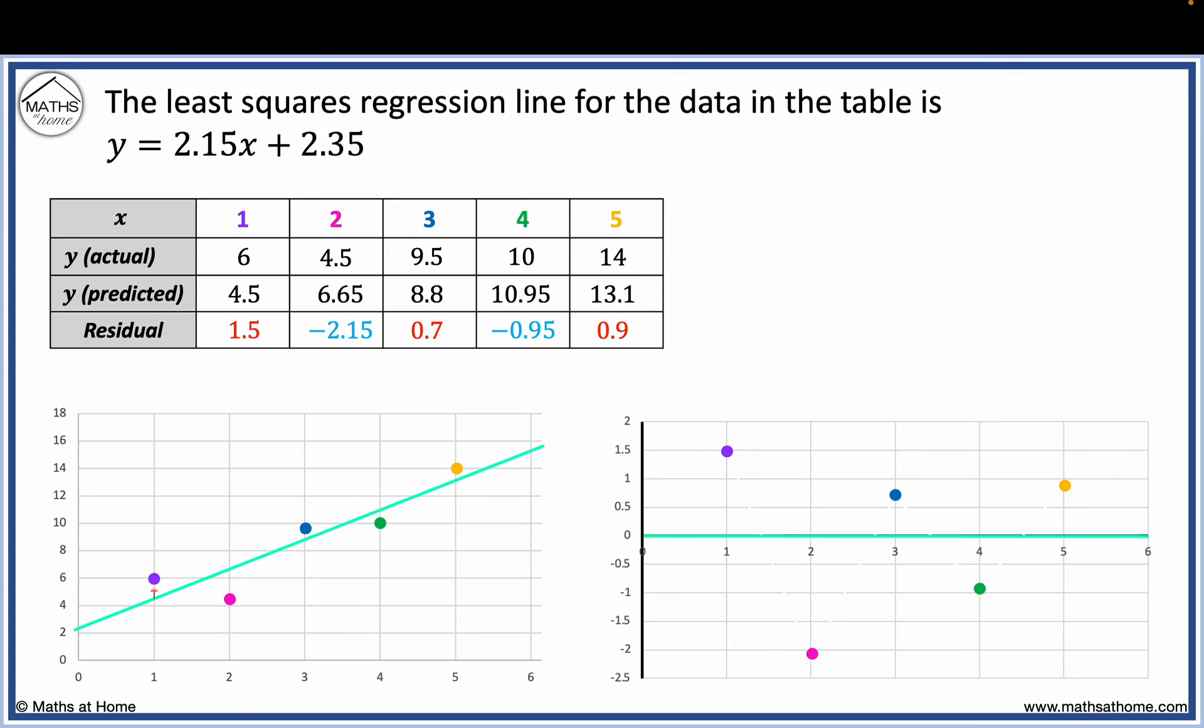For the first point, it is above the trendline and so it is above the x-axis on the residual plot. The second point is below the trendline and therefore is below the x-axis of the residual plot. This is the case for all points.